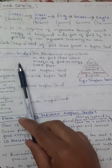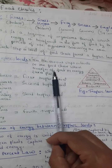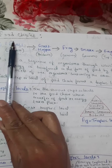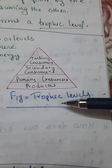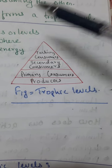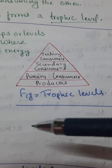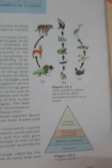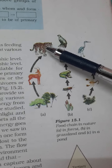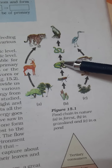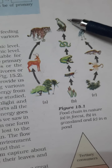This figure shows the trophic levels — this also sometimes comes in examination to draw the trophic levels. It is in your book in figure 15.2. In figure 15.1 you can see different food chains: grasses eaten by deer, and deer eaten by tiger; grass eaten by insect, then grasshopper, frog, snake, and eagle; grass eaten by scorpion, then fish, and fish eaten by crane. These are examples of food chains, and these food chains form different trophic levels.